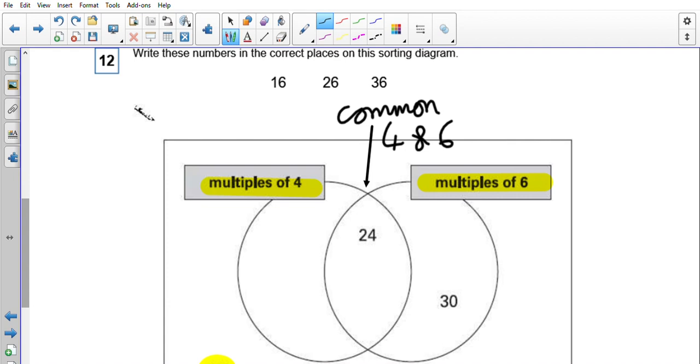So if I think about these, 16. 16 is a multiple of 4, is 4 squared. 16 is not divisible by 6, so 16 is going to be a multiple of 4 only. 26, when I think about 26, now is 26 a multiple of 4? No. Is 26 a multiple of 6? No.